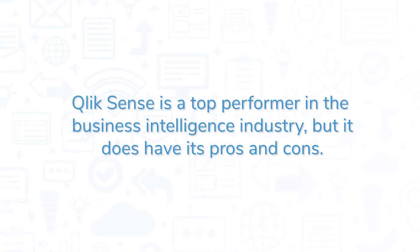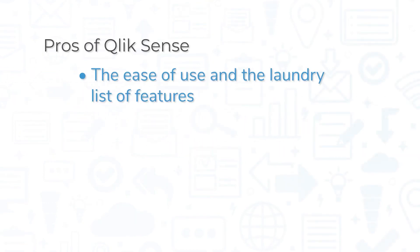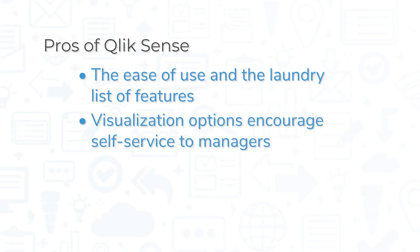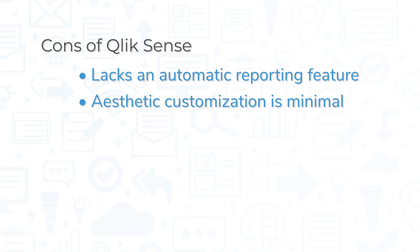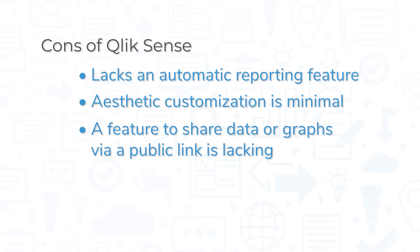ClickSense is a top performer in the business intelligence industry, but it does have its pros and cons. The ease of use and the laundry list of features are the primary pros for many users, and visualization options encourage self-service to managers. However, the lack of an automatic reporting feature is a common complaint. And while many visualization options exist, aesthetic customization is minimal. A feature to share data or graphs via a public link is also lacking.